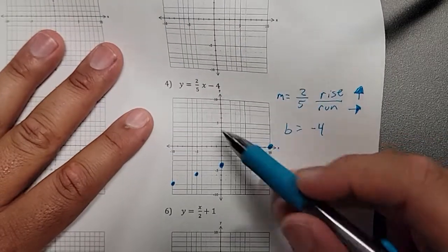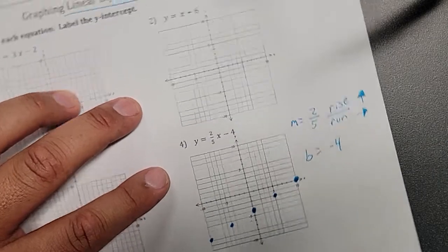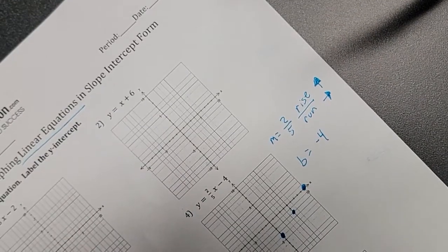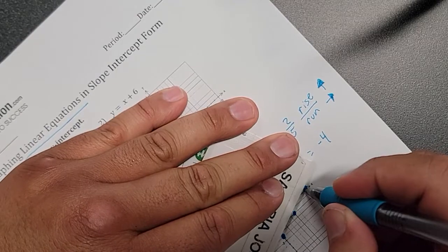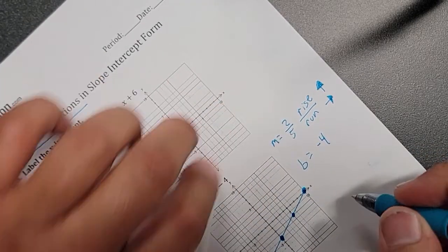Alright. Now equations, we don't have to worry about shading. These are just equal signs. When we have equal signs, these are the easiest ones. Just connect the dots. Let's get a straight edge or something. Use my ID. And there you go.